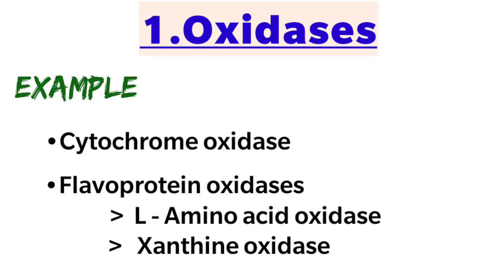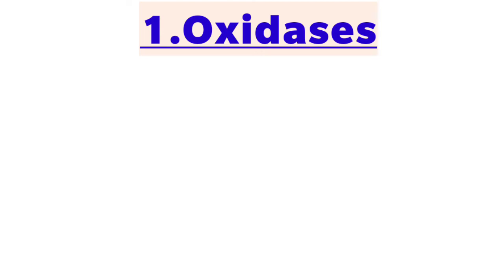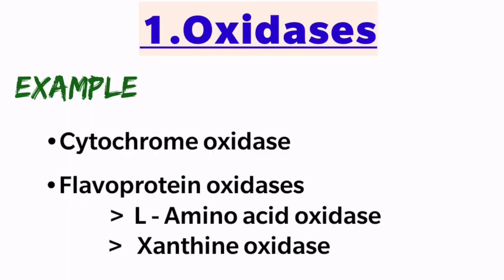Cytochrome oxidase is the terminal component of the electron transport chain — it transfers electrons to oxygen. The second example is flavoprotein oxidases: enzymes which contain FMN or FAD as a prosthetic group are called flavoproteins. Examples include L-amino acid oxidase, found in kidneys and involved in oxidative deamination of L-amino acids, and xanthine oxidase, which converts purine bases to uric acid.